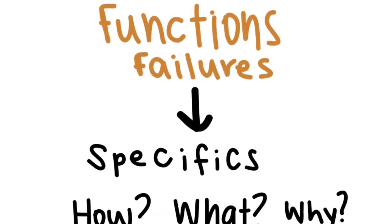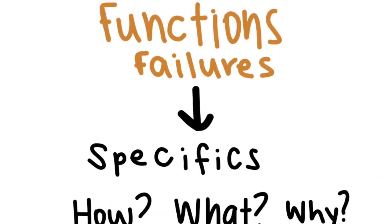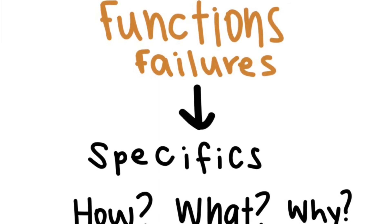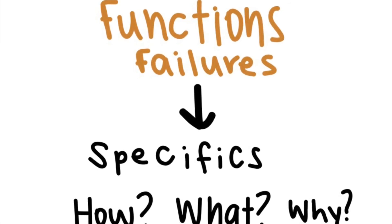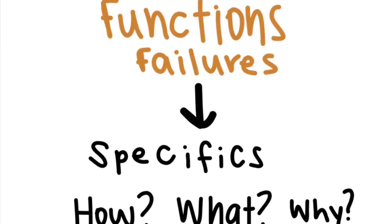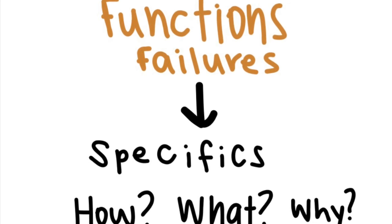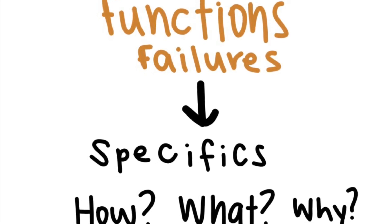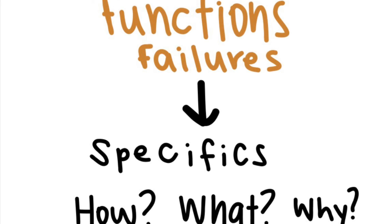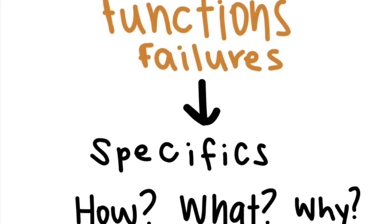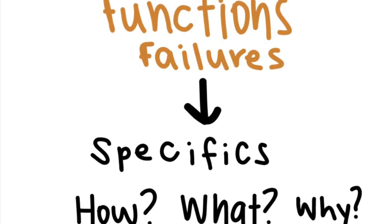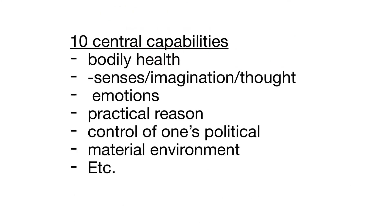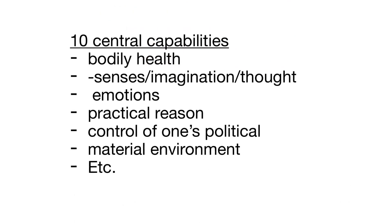These sensitive capability failures can be very specific but need to be recognized and analyzed at this level to properly understand how to best handle the situation. Nussbaum offers a list of 10 central capabilities that should be available to all people, which includes: life, bodily health, senses, imagination and thought, emotions, practical reason, control of one's political and material environment, and more.